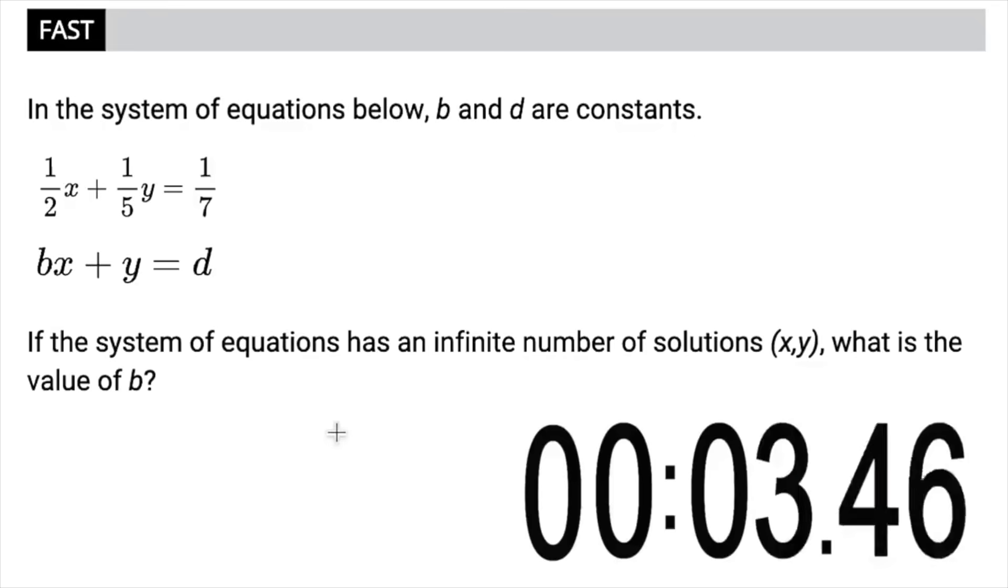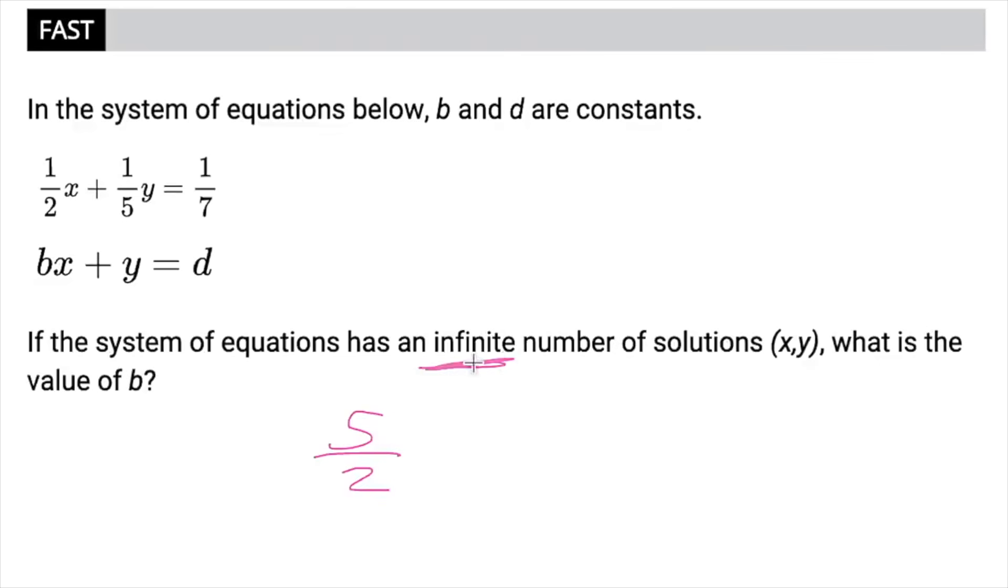All right, let's go. So it's going to be 5 over 2. So this one in my head, I see infinite solutions. Infinite solutions means they are literally the same equation, which means that they're going to have the same slope. So because they have the same slope, the coefficients in front of x and y will also have the same ratio. Now, this says we went from 1/5 y to y, and in order to do that, we would have had to multiply by 5. So to get our coefficient for x, I just took 1/2, multiplied it by 5, and we end up with 5 over 2. So that's how I got that one so quickly.